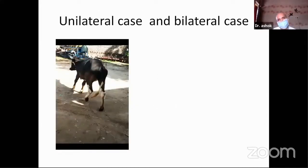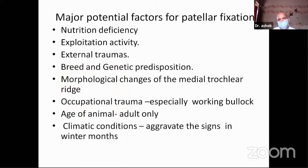What are the major predisposing factors for patellar fixation? Some nutritional deficiencies may lead to this condition. Some exploitation activities and external traumas are also factors. Certain breeds are more commonly affected, though the condition can be noticed in any species or breed. Morphological changes of the medial trochlear ridge also predispose animals to patellar fixation. Occupational trauma, especially in working bulls, is significant. The condition is noted mainly in adult animals, though some younger animals can also be affected. Climatic conditions aggravate the signs in winter.